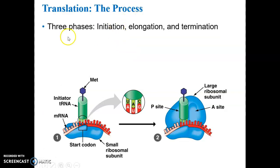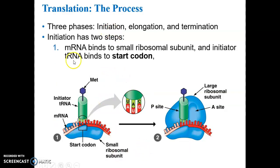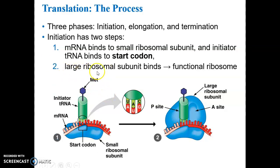The overall process has three phases in translation: initiation, elongation, and termination. Initiation itself has two steps. The first step is where the mRNA molecule binds to the small ribosomal subunit. Then the initiator tRNA binds to the start codon, bringing in its amino acid. Then the large ribosomal subunit joins, and once that happens the ribosome is functional and able to accept the next tRNA molecule in what's called the A-site. Then synthesis and elongation of the polypeptide chain can proceed.